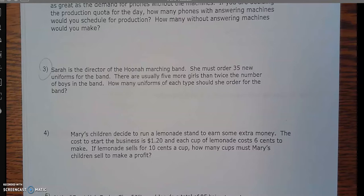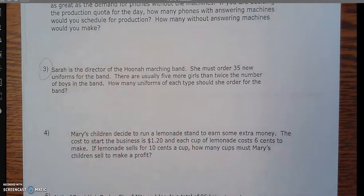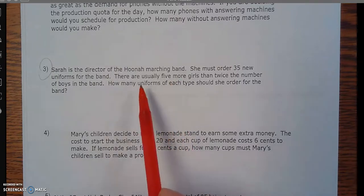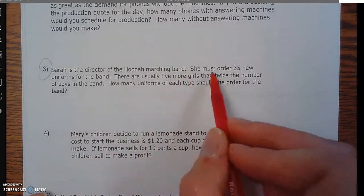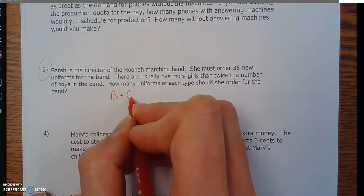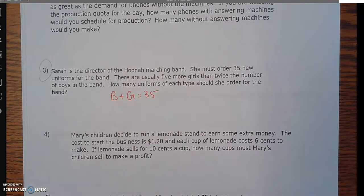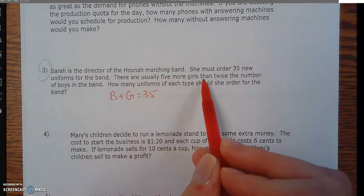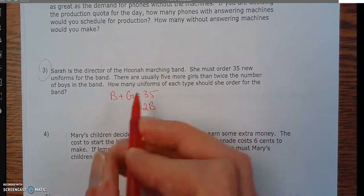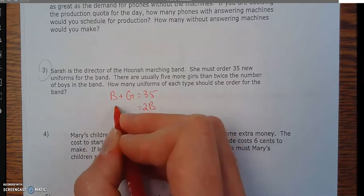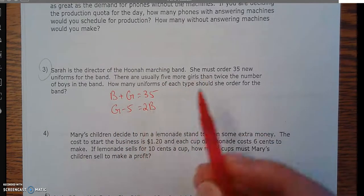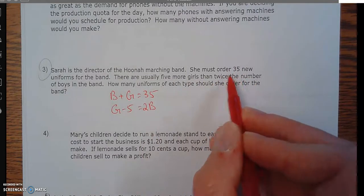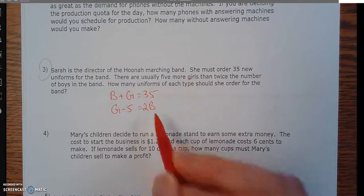And the last one I'm going to do is number three here on the back. Sarah's the director of the Hoona marching band. She must order 30 new uniforms. So just uniforms. Now we're going to specify. There are usually five more girls than twice the number of boys. So first off, she needs order 35. So the number of boy uniforms plus the number of girl uniforms needs to equal 35. The next step is where it gets tricky. Some people will mess this up. It says there are usually five more girls than twice the number of boys. So twice the number of boys, normally the number of girls is five more than this. That means I got to take the number of girls minus five. A lot of people will read that and say five more girls and say girls plus five. You got to be careful with that. So twice the number of boys, if I double it, the girls are five more than that. So if I take five away, it'll equal twice the number of boys.